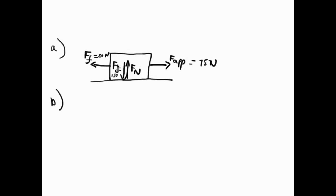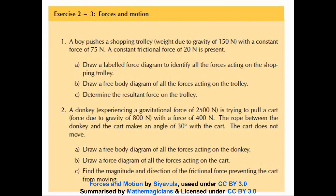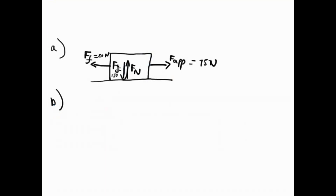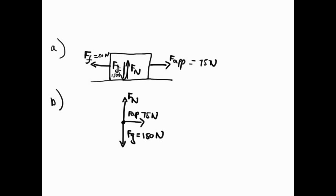For B, draw a free body diagram of the forces acting on the trolley. Now, remember for a free body diagram, the object is depicted as a dot. Arrows are just drawn outwards: normal force, Fg which is gravity equal to 150 Newtons, a constant applied force F app of 75 Newtons, and a 20 Newtons frictional force. Our first two questions are done — quite simple.